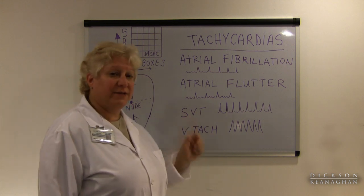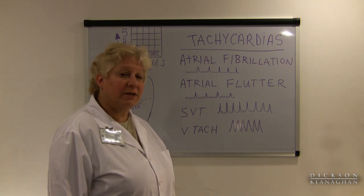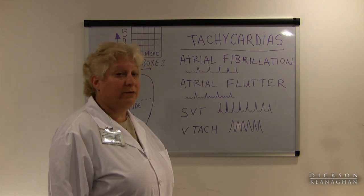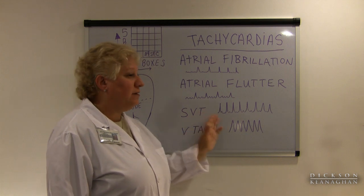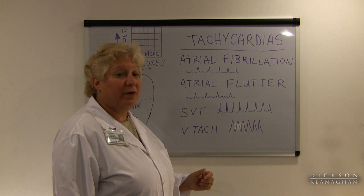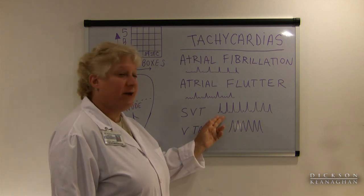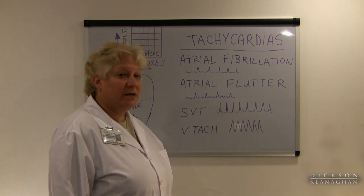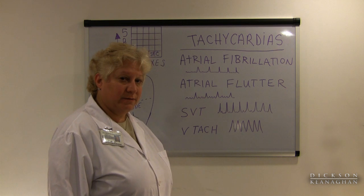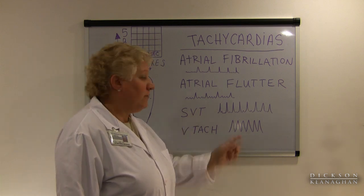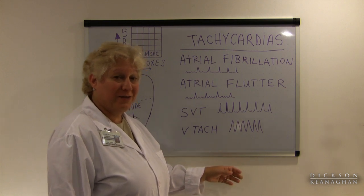Also on the tachycardia list we have SVT, also known as supraventricular tachycardia, also called atrial tachycardia. It can arise from the atrium or from around the AV node as a junctional tachycardia. With SVT, the heart rate is above 150 — even above 130, patients are very uncomfortable and can be unstable. You might notice narrow QRS complexes, but older patients with bundle branch blocks may have wide QRS's, which can look like VTAC and be tricky to identify.